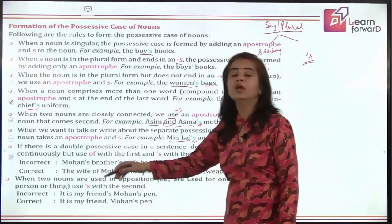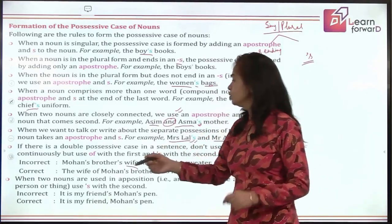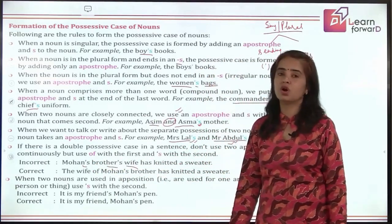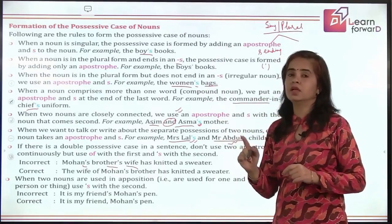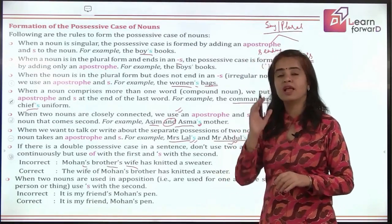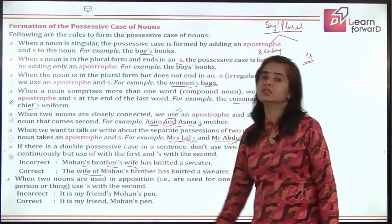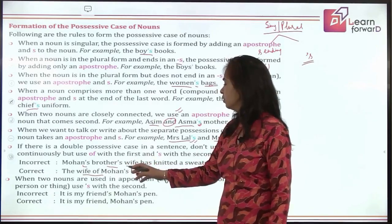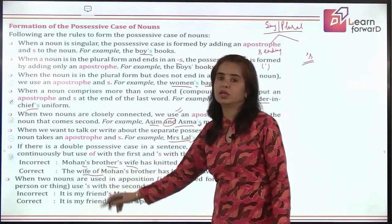Next, if there is a double possessive — for example, 'the wife of Mohan's brother' — it is incorrect to write 'Mohan's brother's wife'. We should not use double apostrophes. Instead, show possession with apostrophe-s for one part and use the preposition 'of' for the other: 'The wife of Mohan's brother has knitted a sweater.' Make sure you put it in the correct sequence.